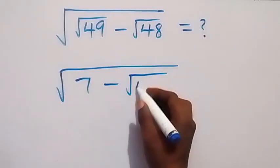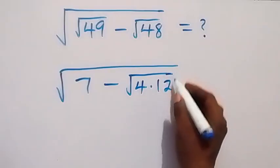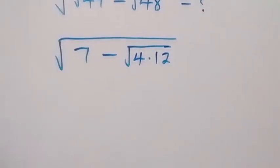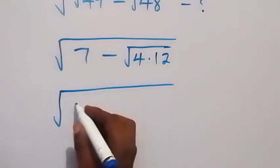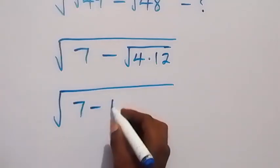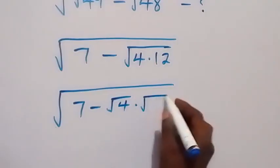We can write root 48 as 4 times 12. And the next step, we can separate this and call it root 7 minus root 4 times root 12.